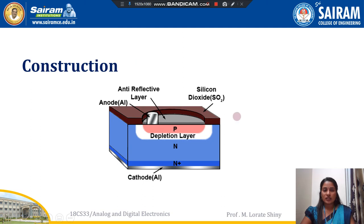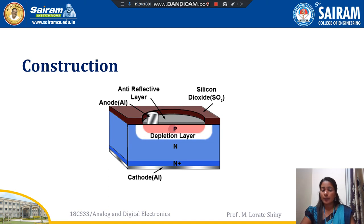In a photodiode, we use light photons as the external energy to generate charge carriers in the depletion region. Regarding construction: the top of the diode is protected by silicon dioxide. There is a window which is used to allow light to shine on the P-N junction. This window is coated with a thin anti-reflective layer of silicon nitride. The aluminium anode is connected to the P-layer. Next to the P-layer, we have the N-layer, and next to that, we have a highly doped N-plus region. The aluminium cathode is taken out from the highly doped N-region. Between the P-region and N-region, we have the depletion layer.